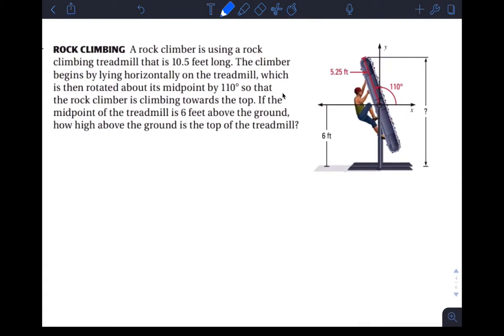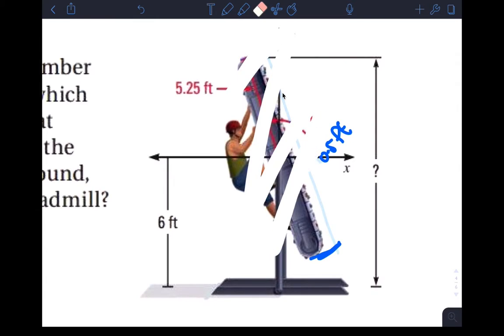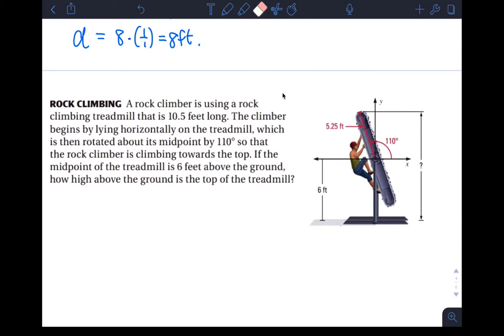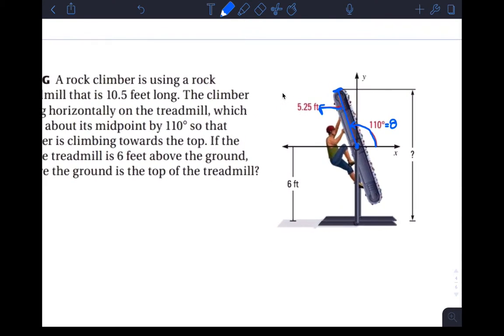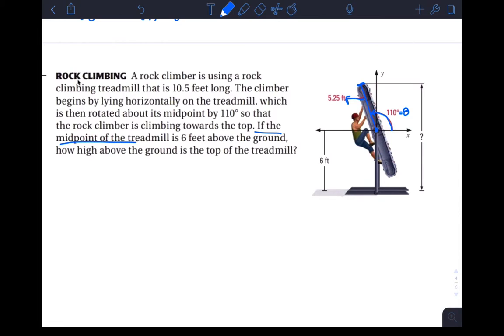Number six is a little bit better. It asks the question, rock climbers using a rock climbing treadmill, that would be this whole device, a rock climbing treadmill, that's 10.5 feet long. So what's the 10.5 feet? This right here is 10.5 feet. That's what's 10.5 feet. And then it says the climber begins by lying horizontally on the treadmill, which is then rotated about its midpoint by 110 degrees. So starting out flat, and then it's rotated 110 degrees, so this angle here is theta, which is 110 degrees.